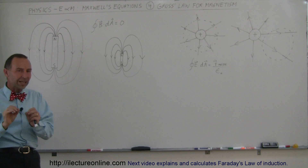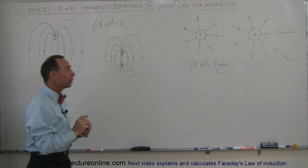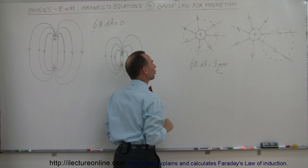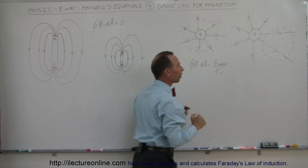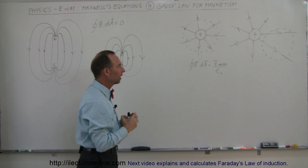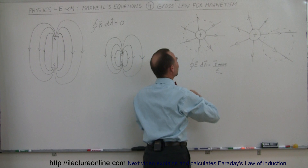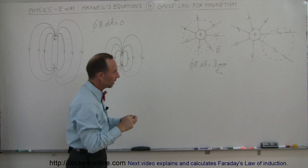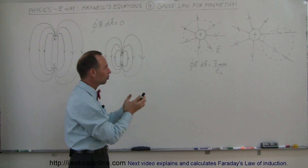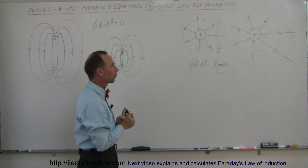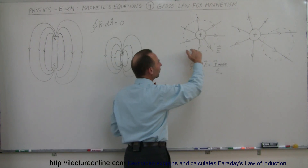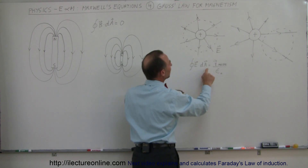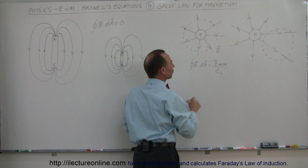To understand what that means, let's look at the first equation dealing with the electric field. If we have a positive charge, the electric field emanates away from it. If we place a Gaussian surface around that charge object, the electric field will be perpendicular to and away from the surface. The surface integral will equal all the charge inside the Gaussian sphere divided by epsilon sub zero.